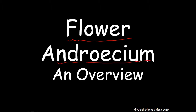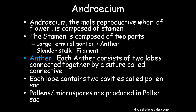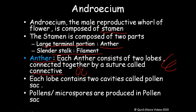Androecium is the male reproductive whorl of the flower. It is composed of stamen. The stamen is composed of two parts: the last terminal part is called the anther and the slender stalk is called the filament. The pollen — which is the male gamete — is produced in the pollen sacs.